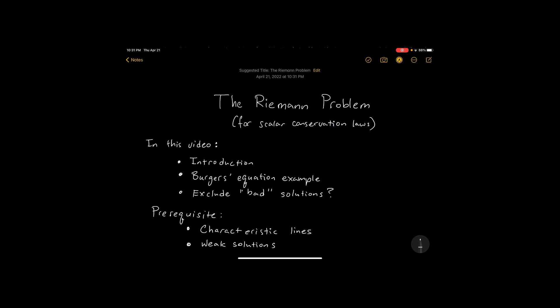In this video we're going to give an introduction, just a quick rundown. We'll see an example with the Burgers equation and then we're going to look at how to exclude so-called bad solutions. It's helpful to know how to draw characteristic lines and what is a weak solution. It's not entirely necessary, but you'll be able to follow along better if you know those concepts.